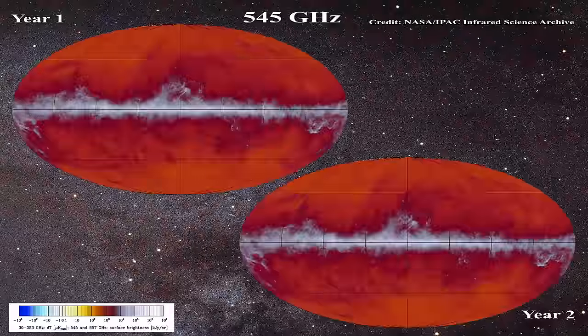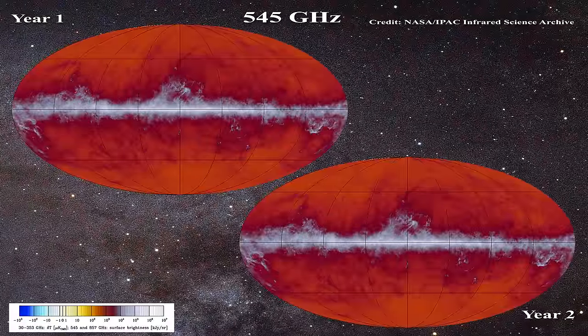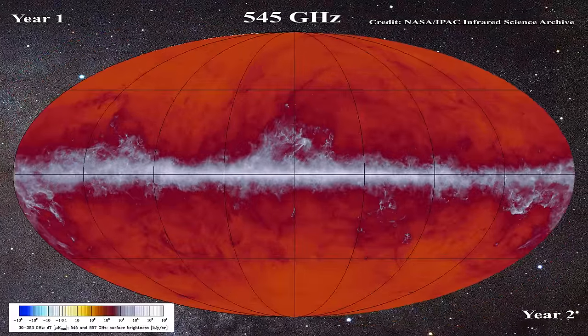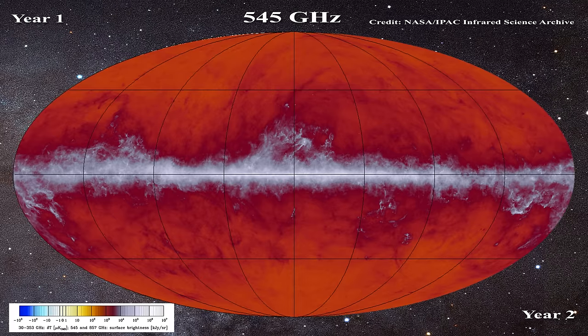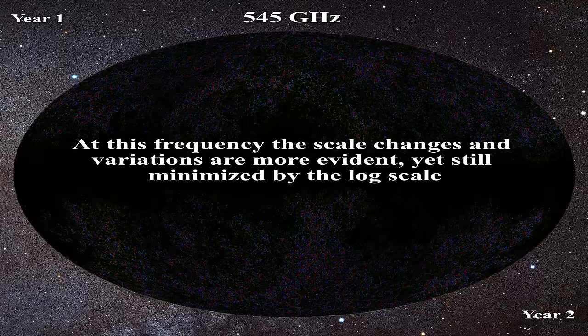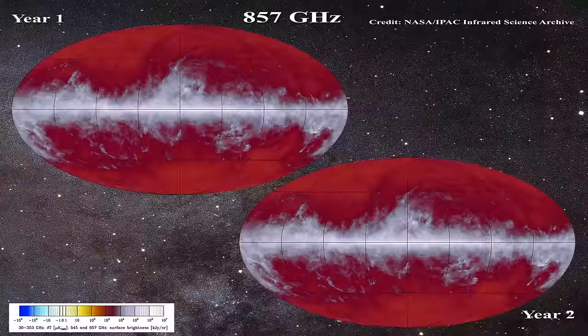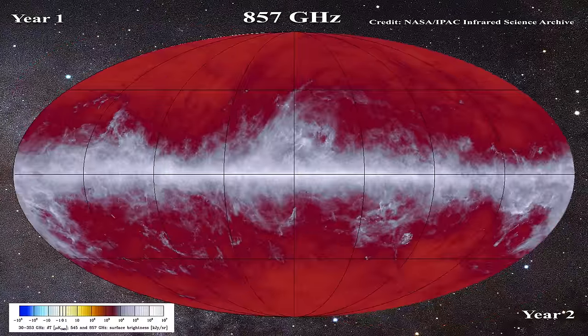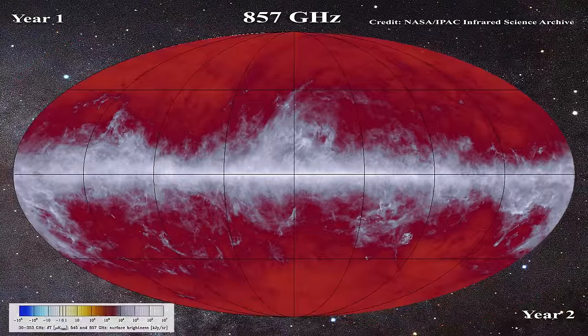Now let us look at 545 GHz year 1 and year 2, followed by the overlap, and finally the subtraction.